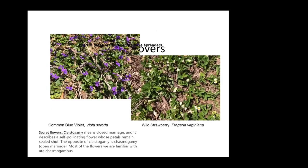A couple more ground covers worth mentioning: blue violet has a neat hidden flower that self-pollinates after the visible flowers, which is one reason it spreads so much. We don't usually recommend planting violets because they do spread everywhere, so you have to be prepared for that. The same thing with wild strawberry — both Augusta and I have had wild strawberry, but it's a fairly aggressive spreader. So if you have a place you want to let it go, it will spread.